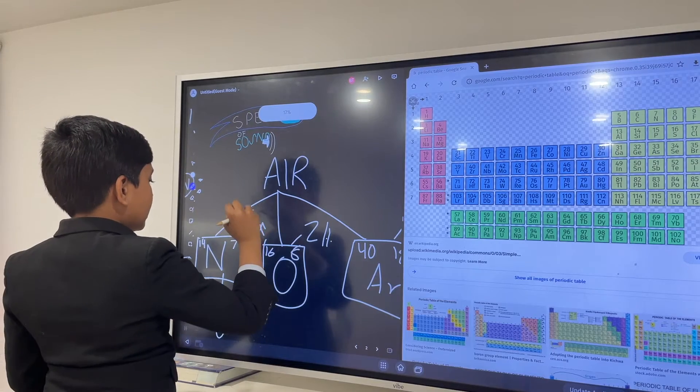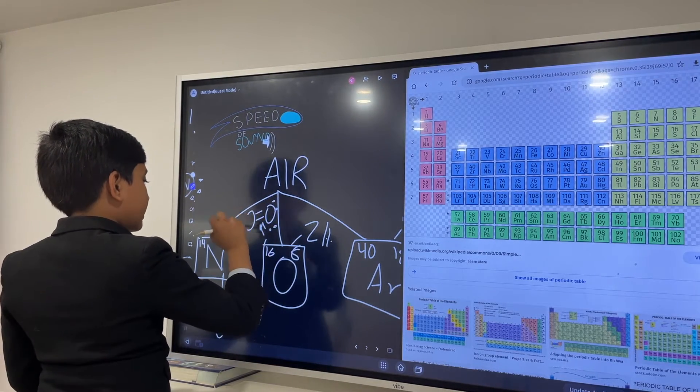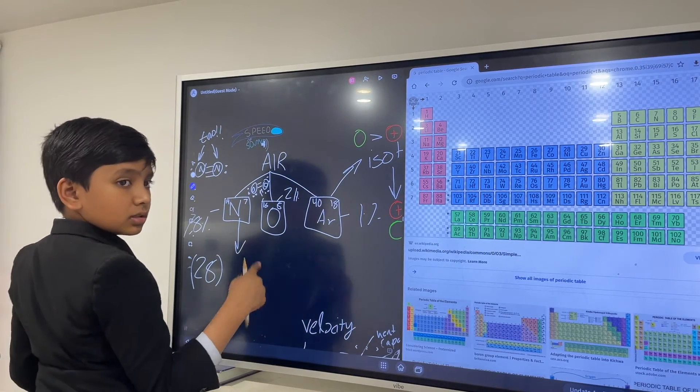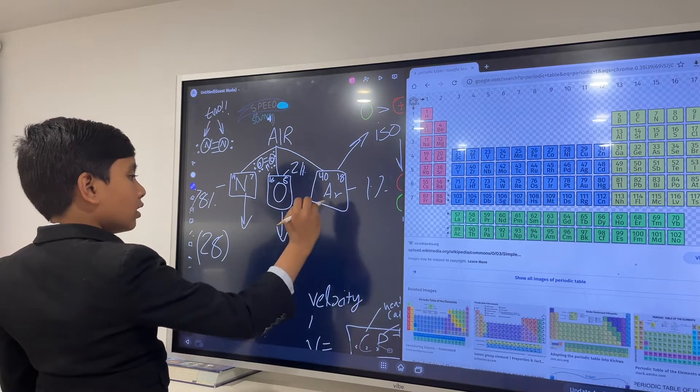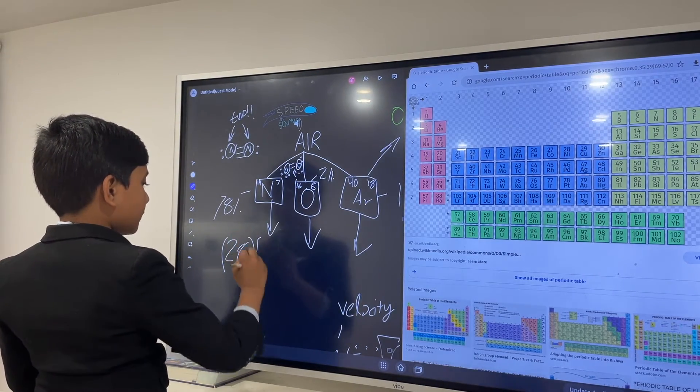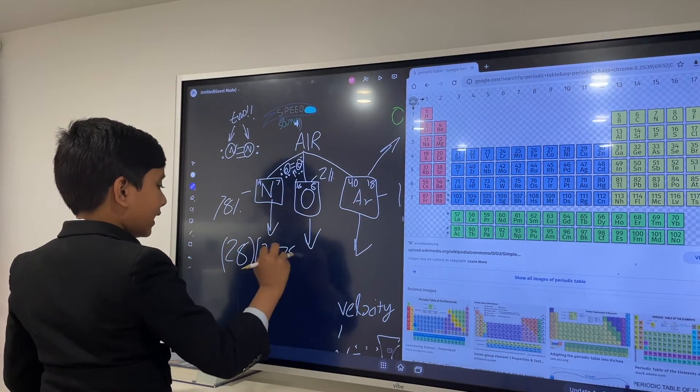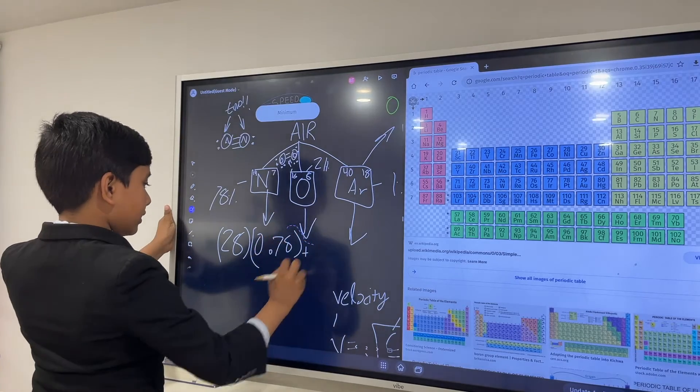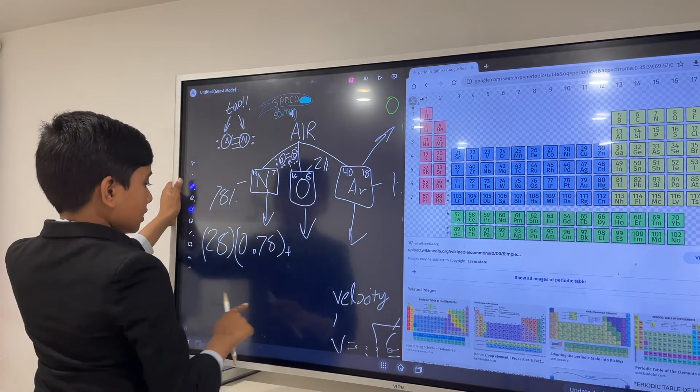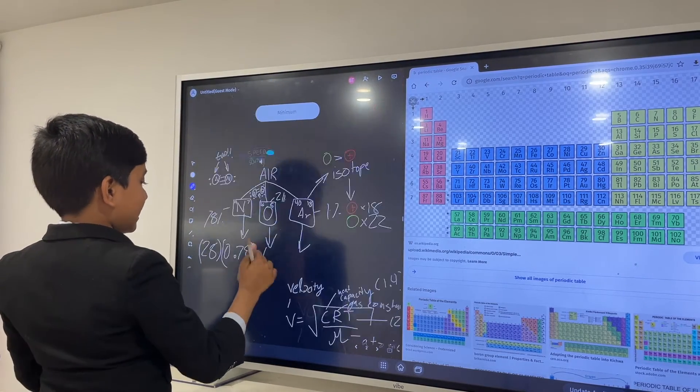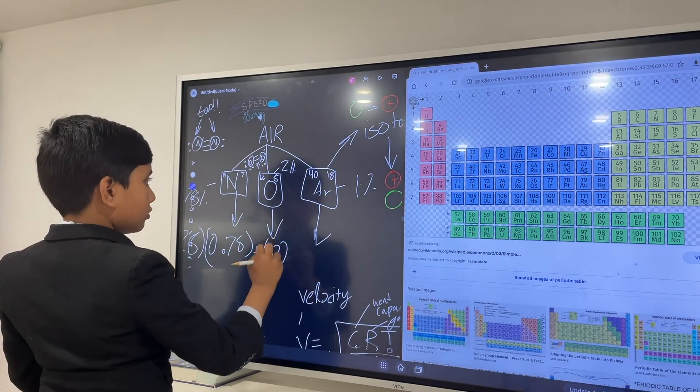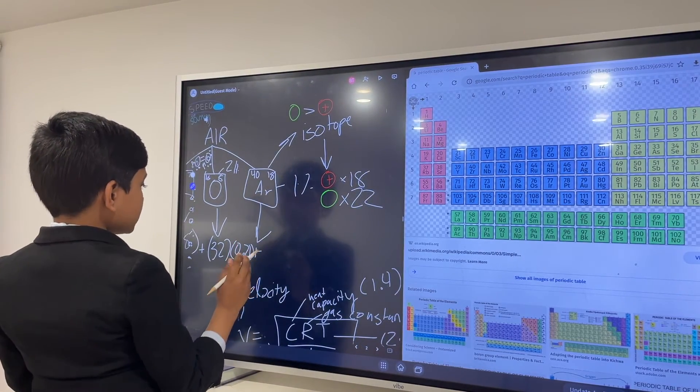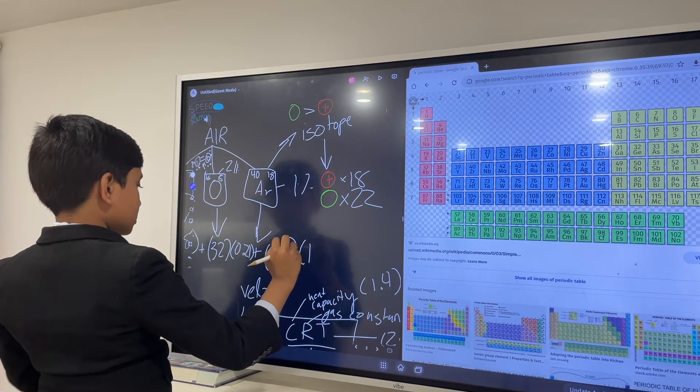Same thing for oxygen. Even though the structure of the things are slightly different, the molecular structure is slightly different, but there were still two oxygen atoms. However, there was only one argon atom. So we have 28 times 0.78 for the percentage, then we get 16, and since there were two molecules, we have 32 times 0.21, plus argon. There was only one atom, so we're going to take 40 times 0.01.